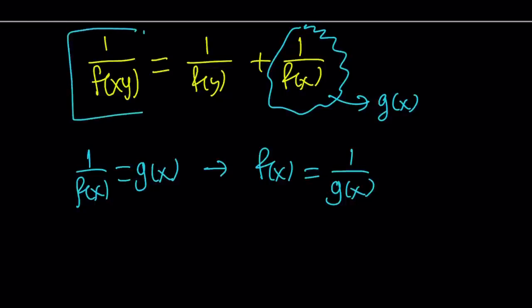So we can now replace this with one over g of xy, because one over f of xy, by definition, is going to be g of xy. Why? Because you're basically replacing x with xy. And that's what you get.